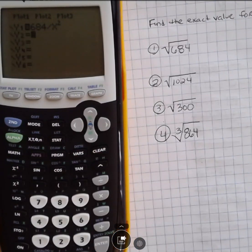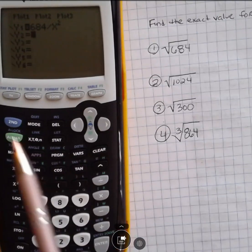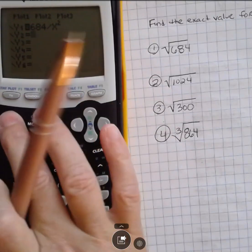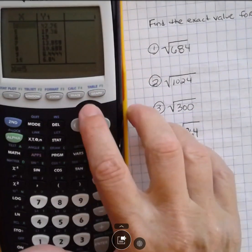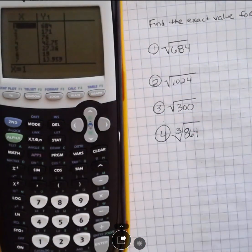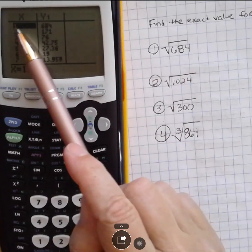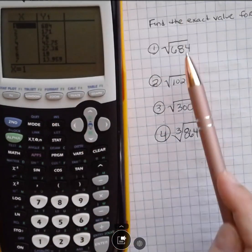Once you have that value in there, go ahead and go to second function table, and you will see that the calculator has listed out a bunch of values. What this is saying is if you took one squared out, you'd have the square root of 684, which is what we have.